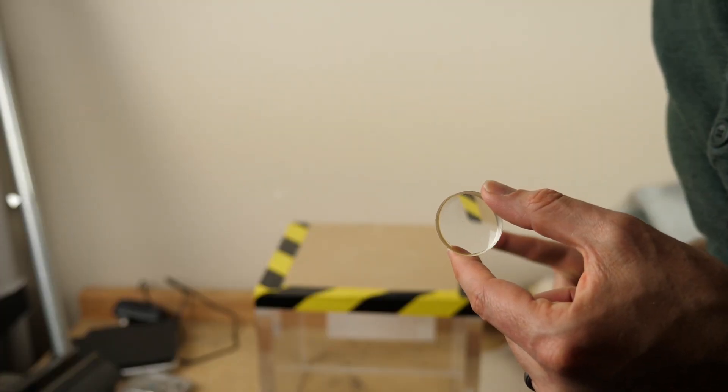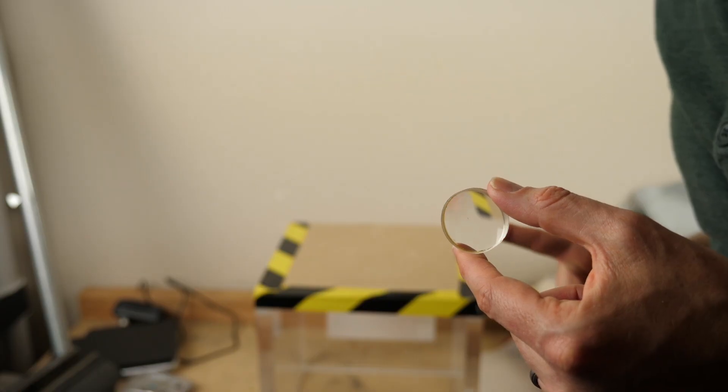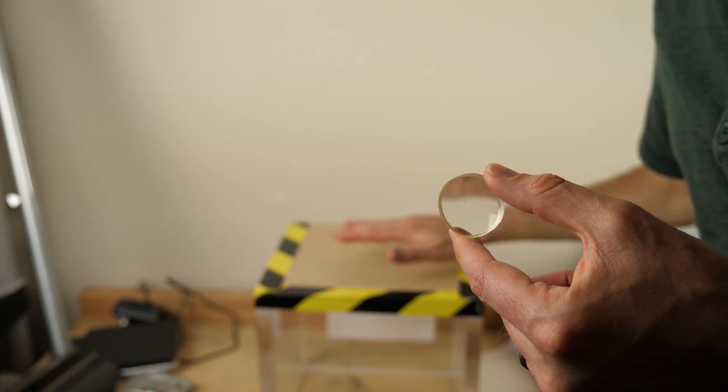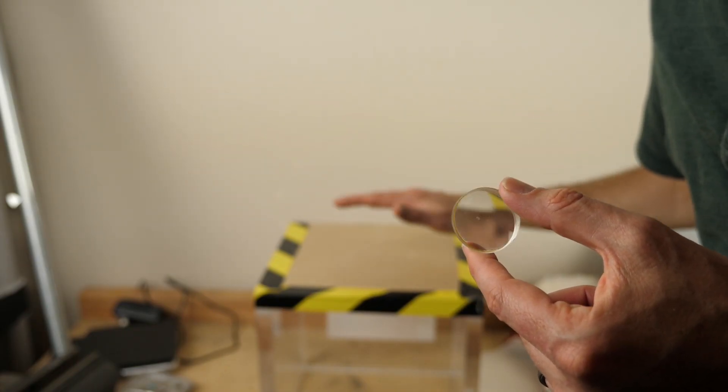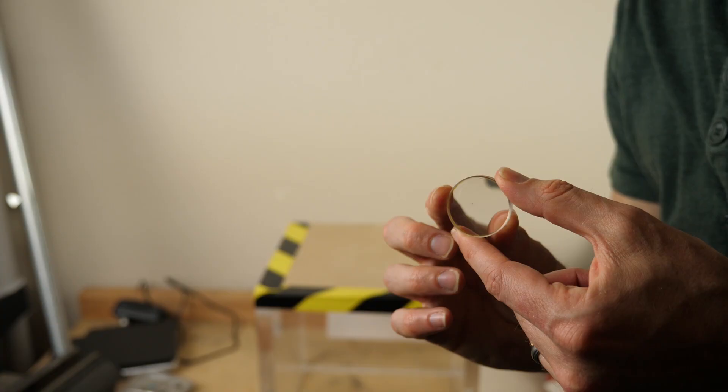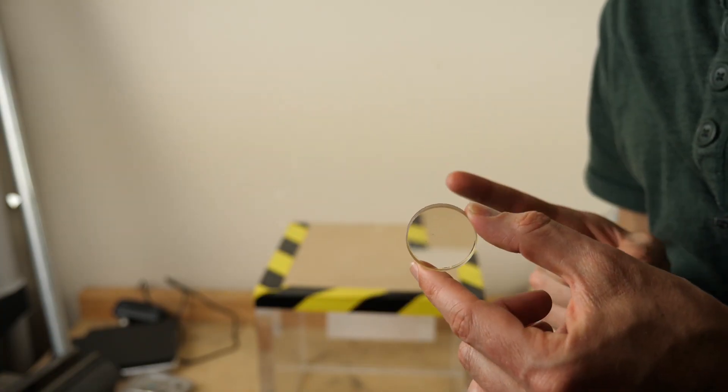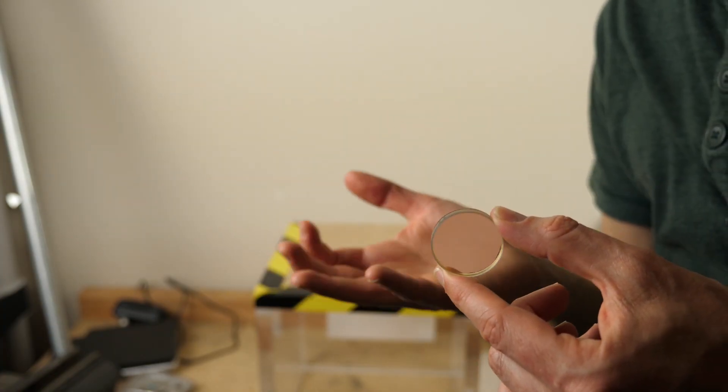For example, this lens here can block the light from my finger in the back. But you can tell there's something there because look at the background. See how the image is flipped and distorted? So you know that there's a lens here and so that doesn't help block the object. You just know that there's a lens blocking it.